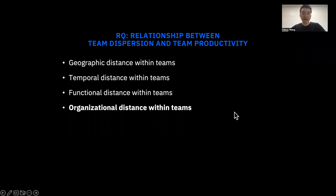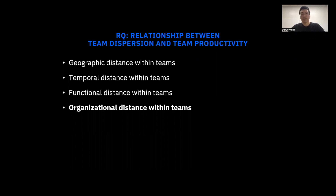Now let's come back to our primary research question: is there a relationship between team dispersion and team productivity? In this paper, we look at team dispersion from four categories: geographical distance, temporal distance, functional distance — which is whether engineers or researchers — and the focus of this paper, organizational distance, as already defined in the previous slides.